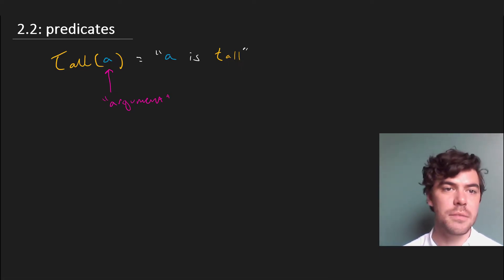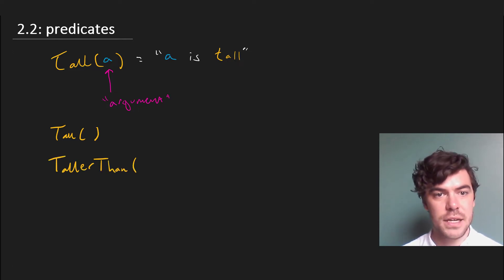Now, predicates can come with one blank space to take an argument, or two blank spaces, or as many blank spaces as you like. For example, tall takes only one blank space, but taller, we might spell this out as taller than, clearly has to be said about two objects, and so it has two blank spaces. For instance, we can say that A is tall and that A is taller than B. We can extend these sorts of things to three.